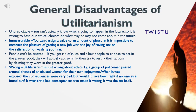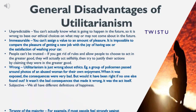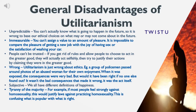Wrong — utilitarianism is just wrong about ethics. For example, a group of policemen passed around photos of an abused woman for their own enjoyment. When it was exposed, the consequences were very bad. But would it have been right if no one else found out? It wasn't the bad consequences that made it wrong — it was the act itself. Subjective — we all have different definitions of happiness. Tyranny of the majority — for example, if most people feel strongly against homosexuality, this would justify laws against practicing homosexuality. This is confusing what is popular with what is right.